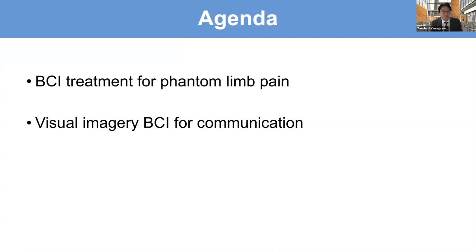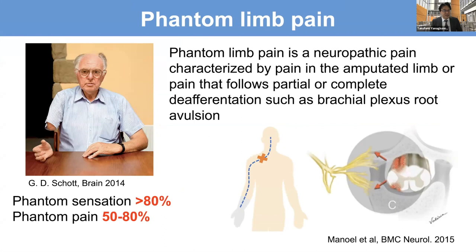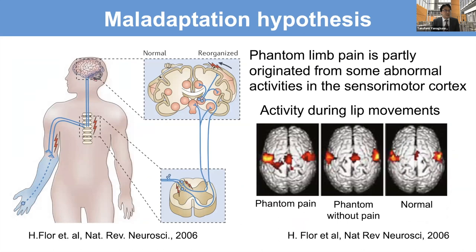Phantom limb pain is a neuroplastic pain characterized by pain in an amputated limb, or pain that follows partial or complete deafferentation such as brachial plexus root avulsion. It is rather common — occurring in 50 to 80 percent of amputees — but there is no treatment recommended as a clinical guideline. Phantom limb pain has been hypothesized to partially originate from abnormal activities in the sensory-motor cortex. One group reported that cortical activation during mouth movement extended into the hand area in phantom limb pain patients.